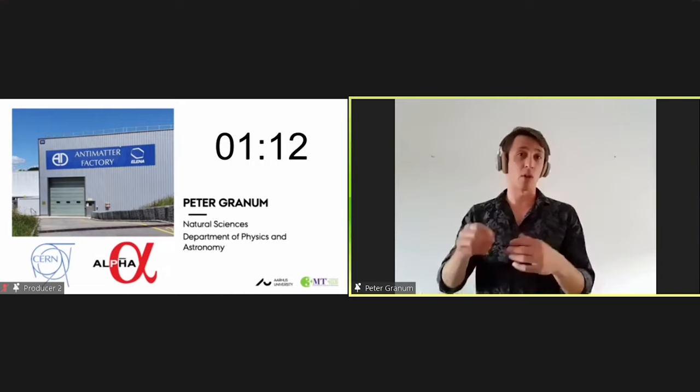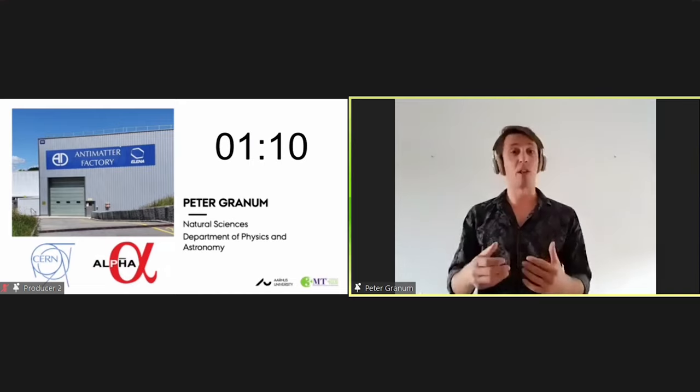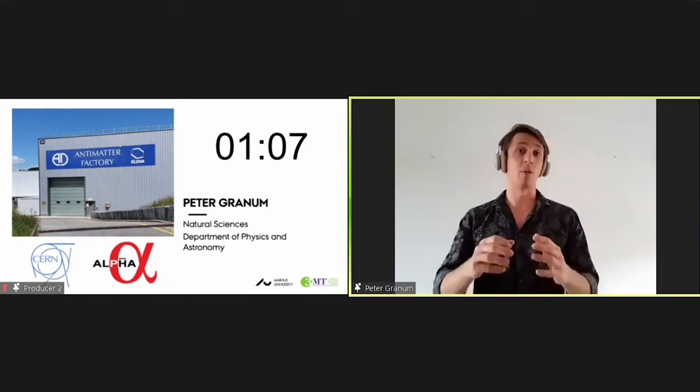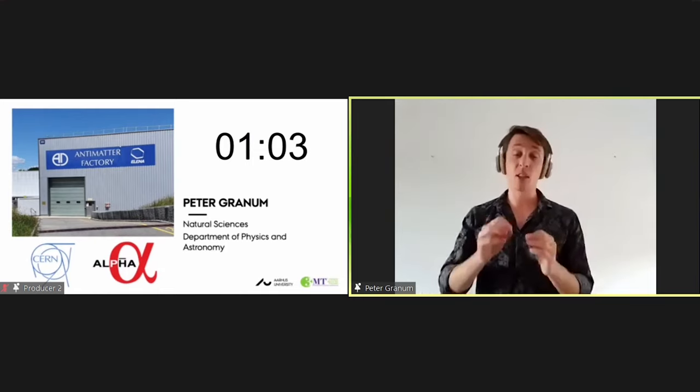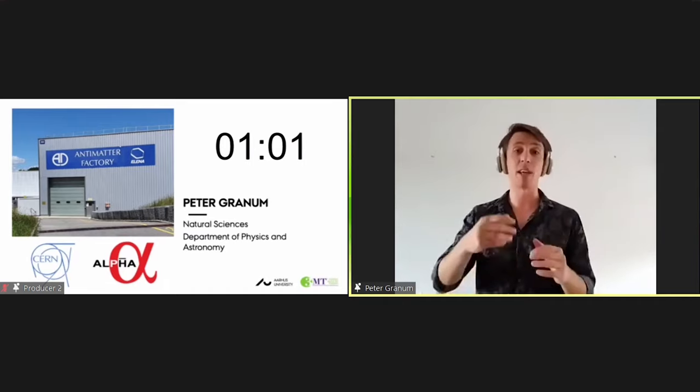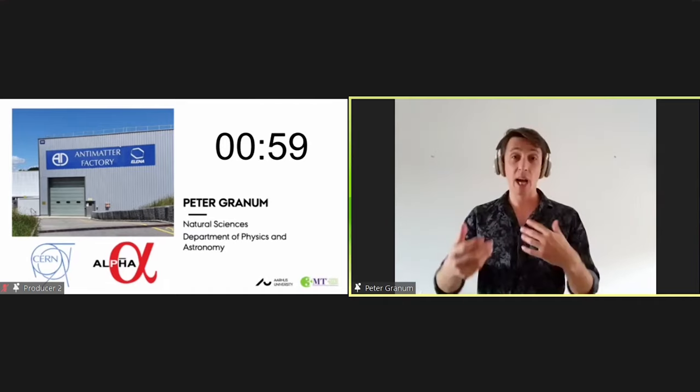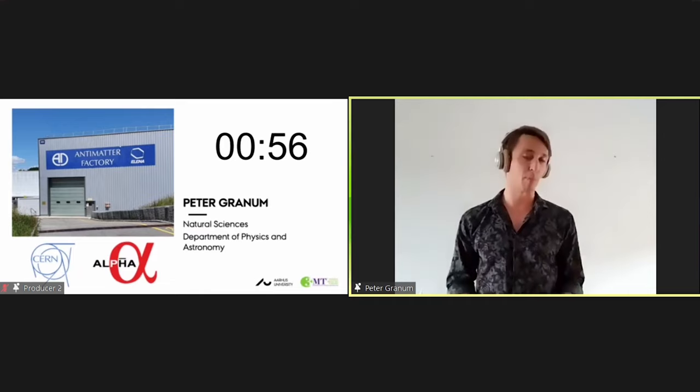At our experiment at CERN called Alpha, we're looking for this asymmetry. As the only experiment in the world, we can create and trap anti-atoms. And it's the simplest anti-atom you can imagine. It's anti-hydrogen. By shining on the lasers, we can measure what's called its energy spectrum.